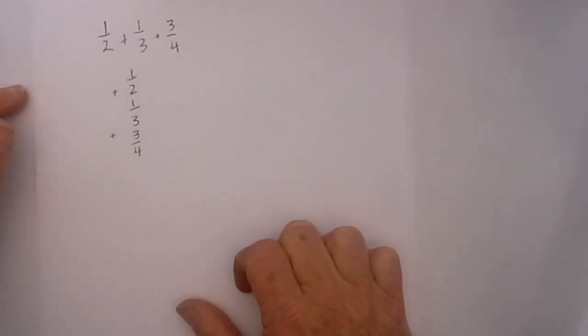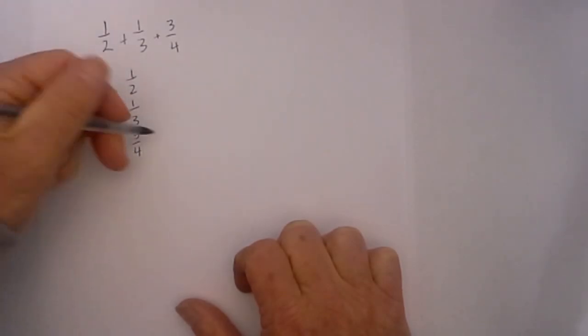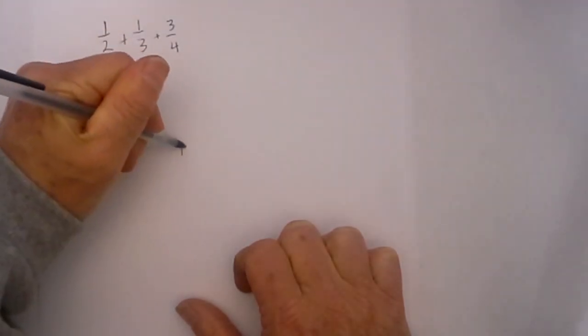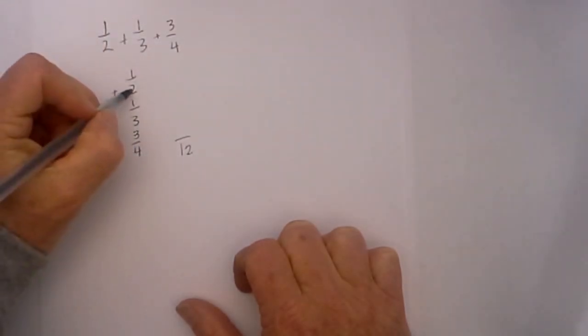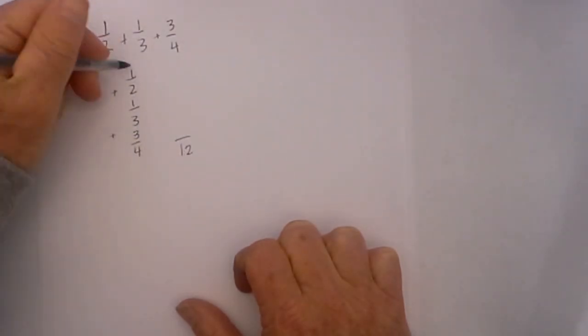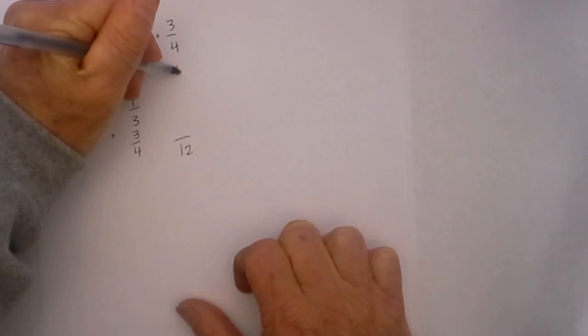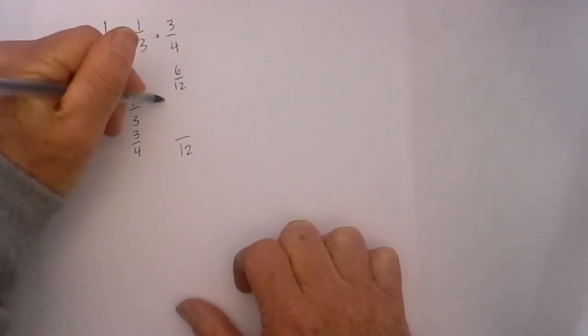Since I have three fractions I find a common denominator for all three. We have four, three, and two, so the common denominator is twelve. Two goes into twelve six times and six times one is six. We have six twelfths and I just keep them in this vertical column.